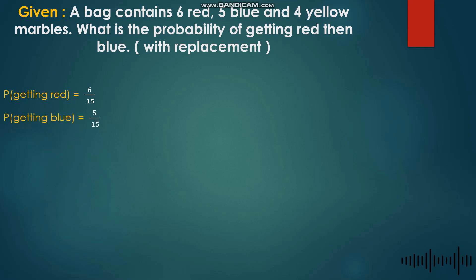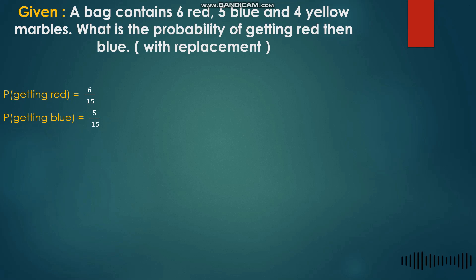Next, the probability of getting blue is 5 over 15 — 5 blue marbles in the numerator, and the denominator is still 15 because with replacement the marble is returned. So the total number of possible outcomes is not affected, and we still have 15 as the total.